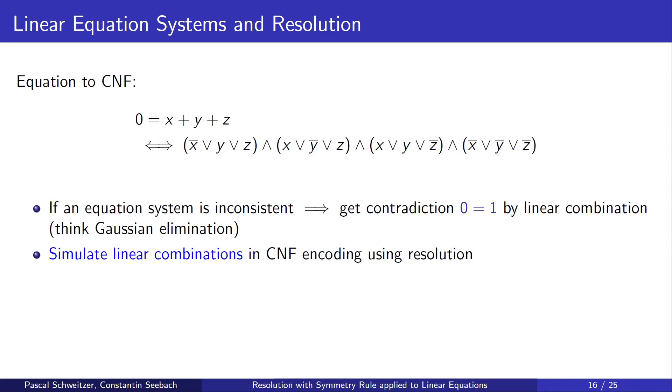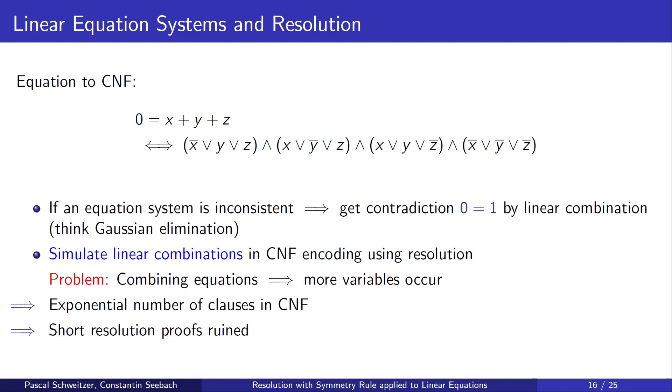How do we get from linear equations to resolution? We can encode linear equations also as CNF formulas. If an equation system is inconsistent, so has no solution, we can get a contradiction 0 is equal to 1 using linear combinations. We can simulate these linear combinations in our CNF encoding using resolution. The problem here is that when we combine equations, more variables can occur in a single equation. And the CNF encoding of equations requires an exponential number of clauses. So this way we can't get short resolution proofs.